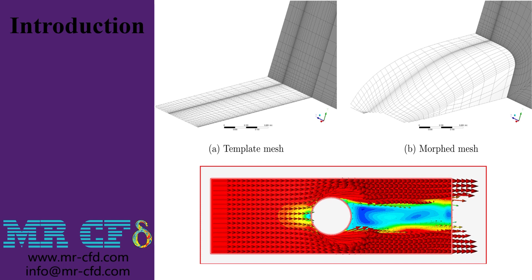Our goal would be to decrease the drag force acting on the cylindrical obstacle. Naturally, in every optimization process that we consider, there are a series of input parameters that by changing them, we want to achieve our goal, which is to decrease or increase any other parameter and check those input parameters' effect on the target.